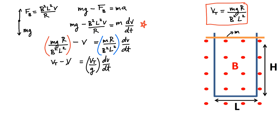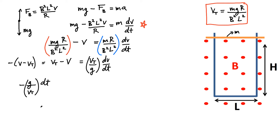Rearranging to separate variables: put all velocity terms on one side and dt on the other. The left side becomes minus(g / V_T)·dt and the right side becomes dV / (V minus V_T). Now integrate both sides — the left from 0 to t, and the right from V=0 to V'. The left side is straightforward with constant terms factored out.